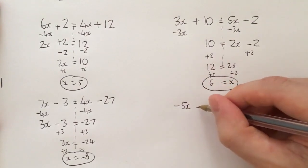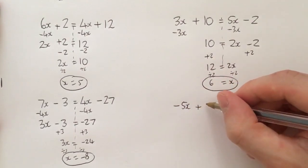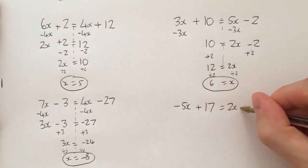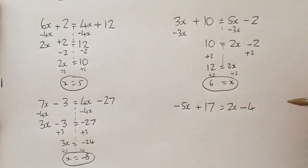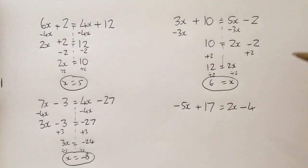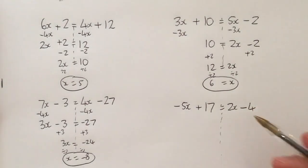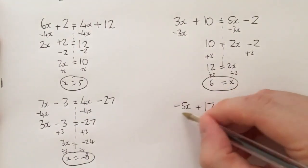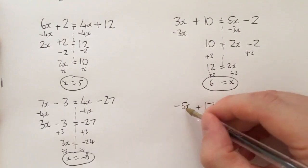Last quick example. Let's say -5x + 17 = 2x - 4. Same process. We look and we say what's the smaller x? Now a lot of you might say 2x, but you've got to look carefully. That says 2x, that says negative 5x. Technically, negative 5 is smaller than 2.